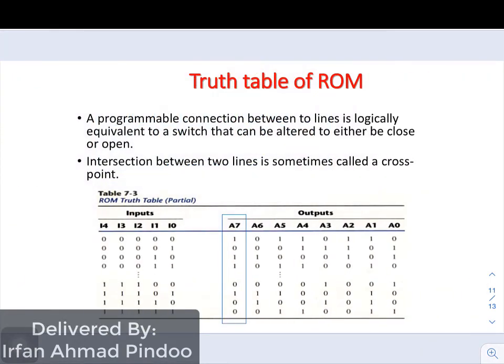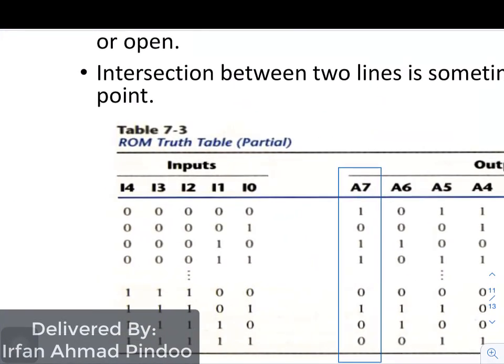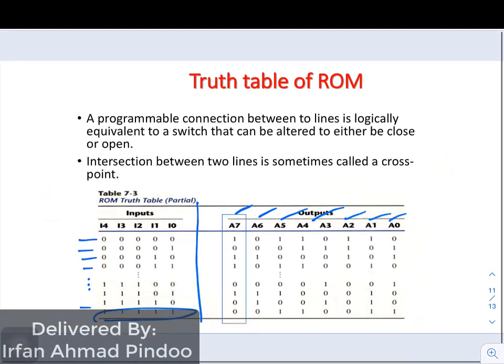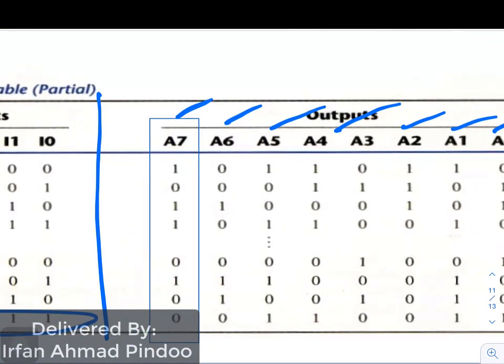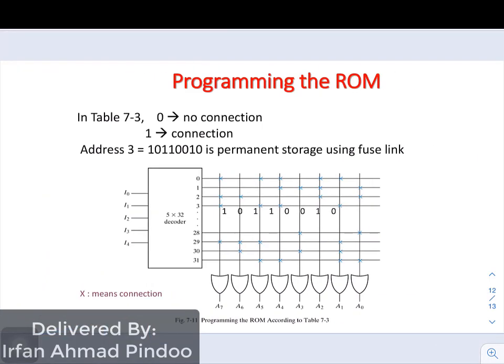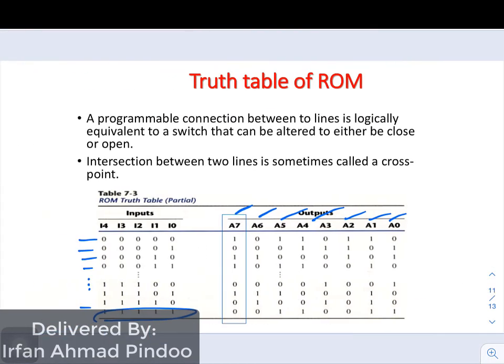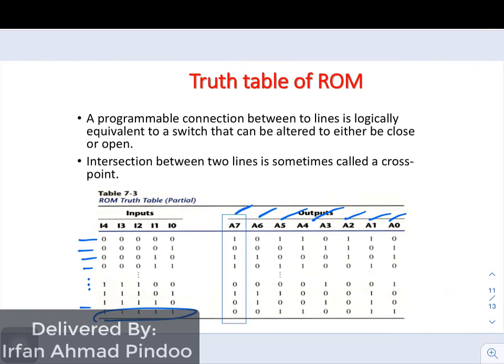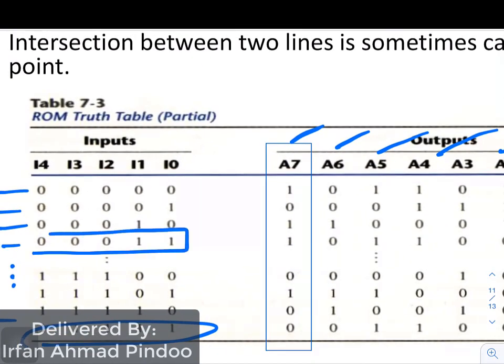Now we will continue with the same problem. You can see here the 5 inputs that were given, these are all the possible combinations of inputs starting from all 0s to all 1s and these are 8 outputs that are being given to us. Now what we can do is they all actually represent the different address lines. Now just to illustrate how we can store the data or how can we program, in this particular slide we are taking an example of address number 3.